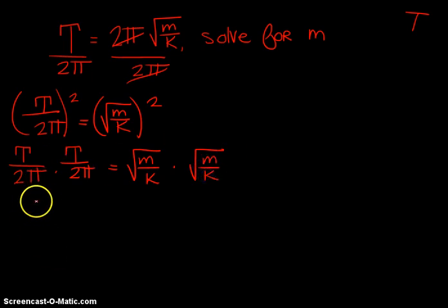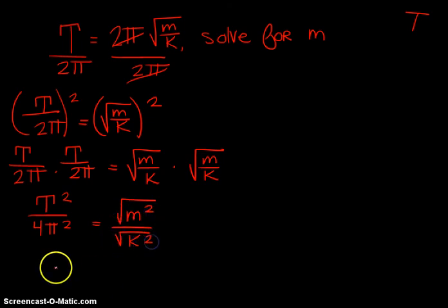Over here we get period squared. 2π times 2π gives you 4π squared, equals square root of m times square root of m gives you the square root of m squared all over the square root of k squared. This is going to simplify down to just be m over k.